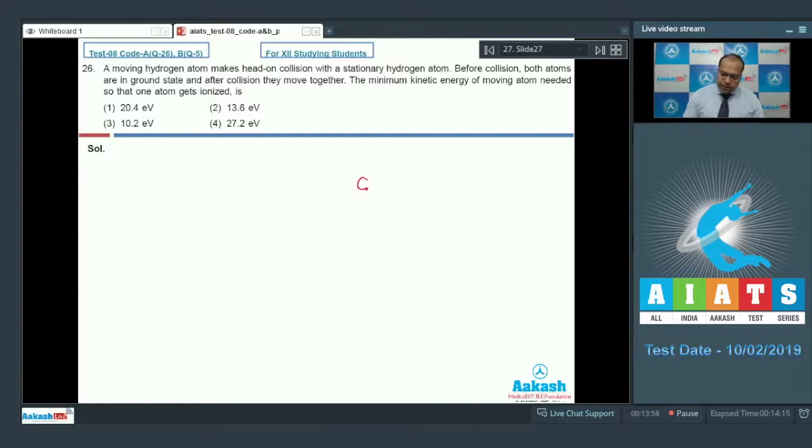so let this is one of the hydrogen atom and it is moving with kinetic energy K, so this is equal to half into M into V square, let its mass is M and it is moving with velocity V. So the other hydrogen atom is at rest at this moment. Now,